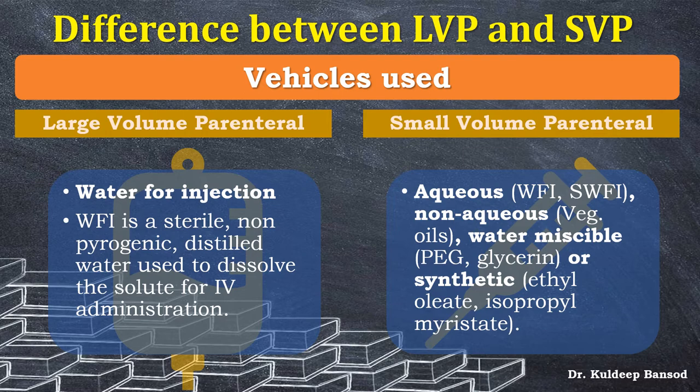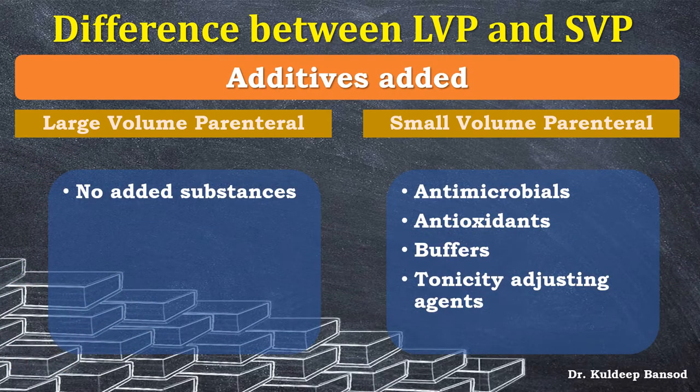Another difference is the additives used. In large volume parenterals, because administration is done at once, there are no added substances. In small volume parenterals, which are multi-dose container types, antimicrobials like benzalkonium chloride and benzyl alcohol are added, as well as antioxidants like ascorbic acid, thiol derivatives, butylated hydroxytoluene (BHT), butylated hydroxyanisole (BHA), and propyl gallate. Buffers such as acetate, phosphate, and citrate are added to manage pH, and tonicity-adjusting agents like sodium chloride and dextrose are also included.